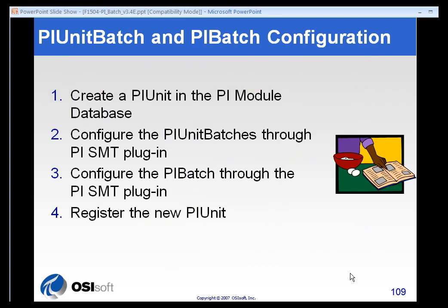All of this is configured with four very basic steps. We first create a PI unit in the module database — that's simply a module with a special parameter set. We then configure our unit batches through our PI SMT plugin. If we have PI batches at a higher level, we configure those using the PI SMT plugin as well. And finally, to get the interface to pick up the batch and start recording, we register the new unit again using the PI SMT.